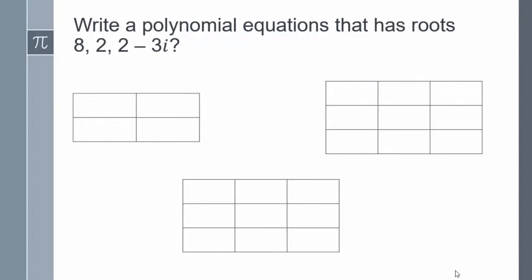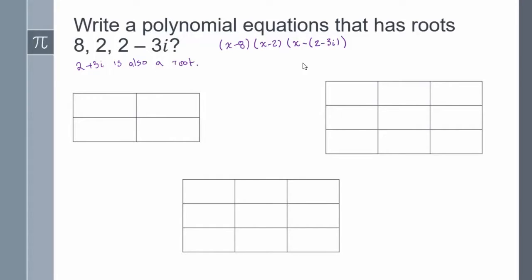Write a polynomial equation that has roots 8, 2, and 2 minus 3i. I have three solutions listed, but any time I have a complex number I know I should also have its conjugate. So since I have 2 minus 3i, I also have a solution of 2 plus 3i. Since I have four roots, this polynomial will have degree 4. In factored form: root 8 gives x minus 8, root 2 gives x minus 2, root 2 minus 3i gives x minus the quantity 2 minus 3i, and root 2 plus 3i gives x minus the quantity 2 plus 3i. I'll multiply the first two factors together and the last two factors together.